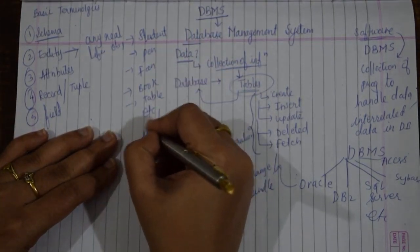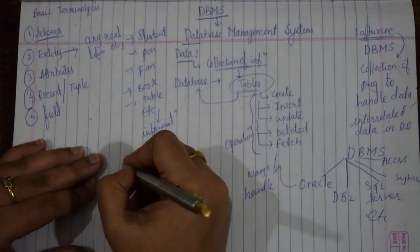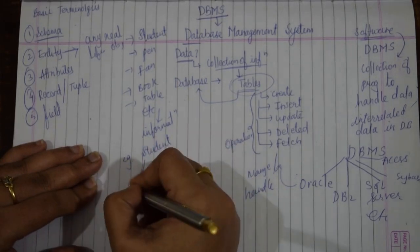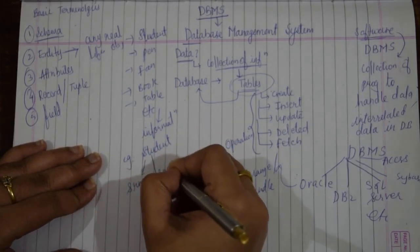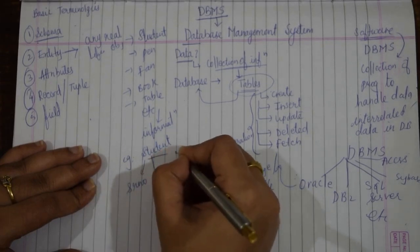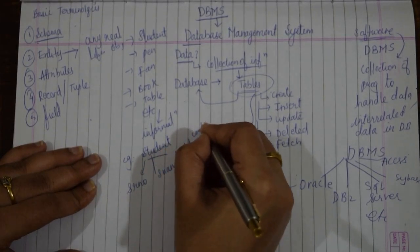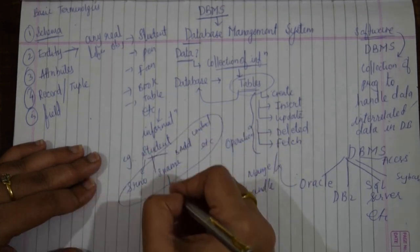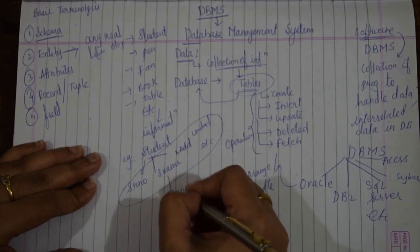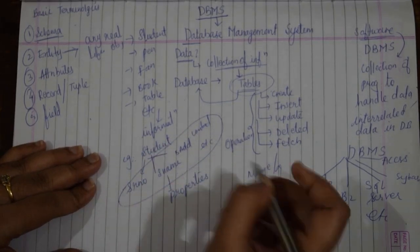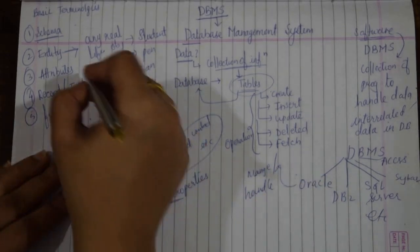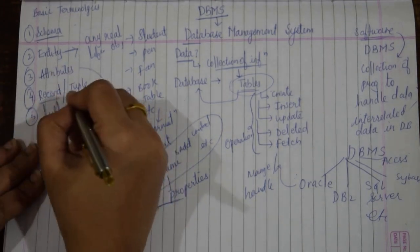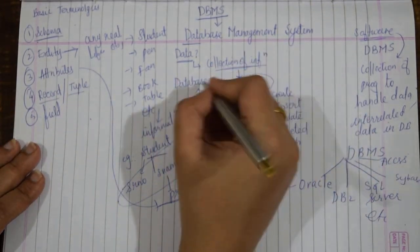Now this entity has some information. For example, a student has a roll number, student name, student address, contact number, and so on. These are all the information or properties of a student. The properties of an entity are called attributes.